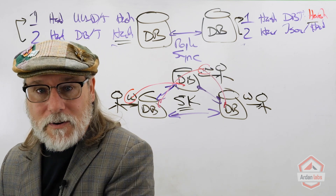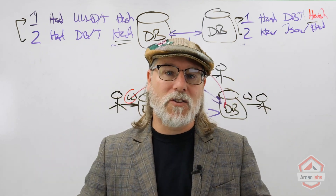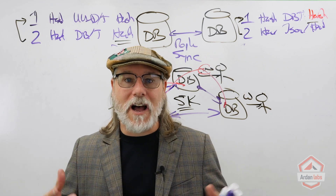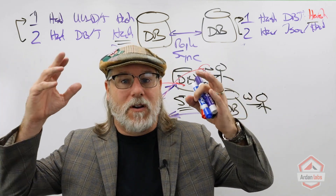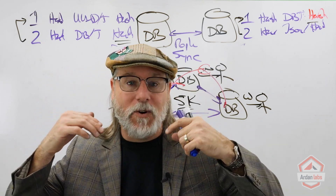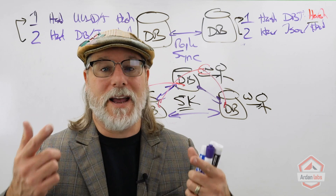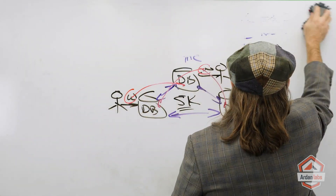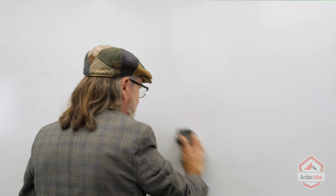One way to solve this problem is to think about consensus. Consensus algorithms are designed to solve this type of problem where we have a distributed system and want to maintain a decentralized database, but we want all databases to be exact duplicate copies in order. The consensus algorithm we choose will give us atomic appends, and once we have atomic appends, we have a reliable audit trail to validate any new appends that come into the system.